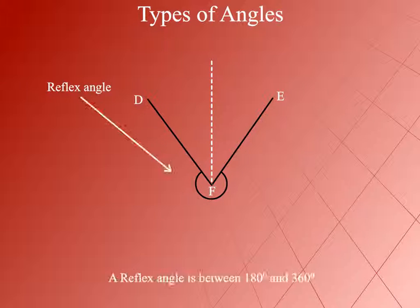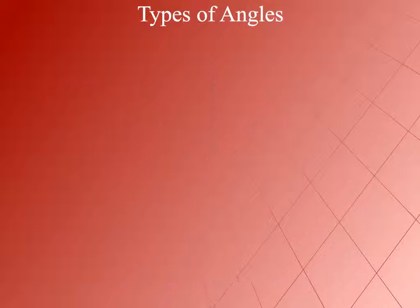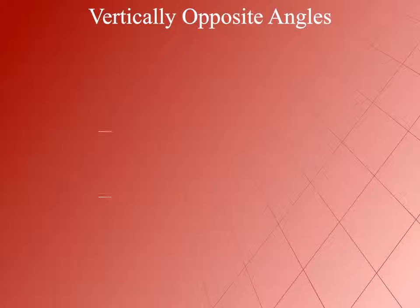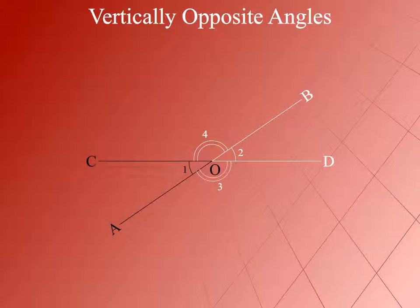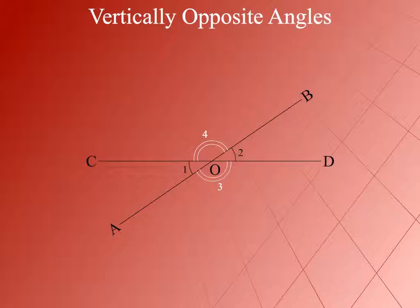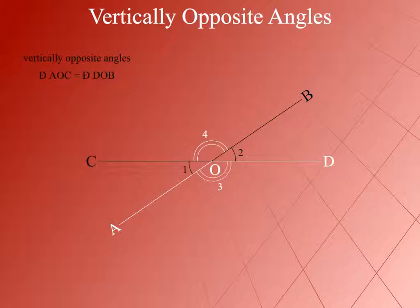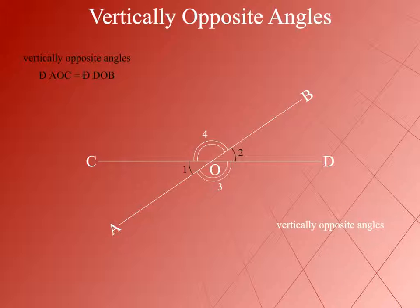Vertically Opposite Angles. Here are two lines AB and CD intersecting each other at point O. Four angles are formed. Angle AOC and Angle DOB are angles opposite to each other — these make a pair of vertically opposite angles, which are equal. Angle AOC is equal to Angle DOB.